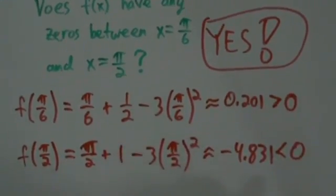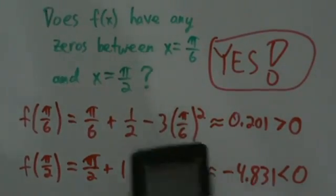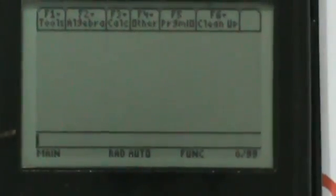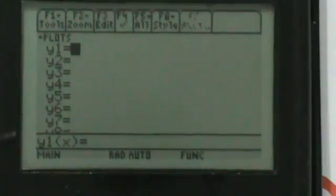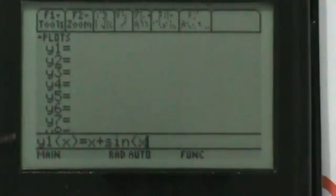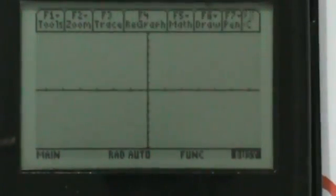To verify that, let's take a look at a graph. We'll turn this on, zoom into it, go to the graph. Our function is x + sin(x) - 3x². We can look at it here.